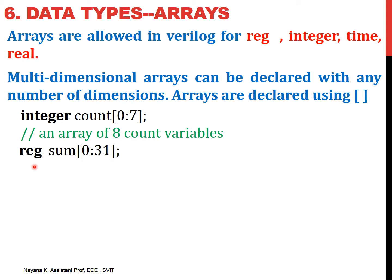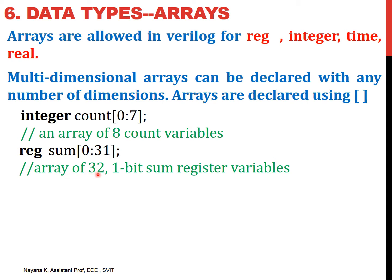Second example: this declares an array named sum. This array has 32 elements — 0 to 31. Each of these elements is of type REG, and REG can take values 0, 1, x, or z. So all the values within this array named sum are just one-bit values. This declares an array of 32 one-bit sum register variables.